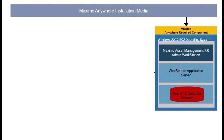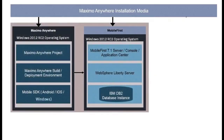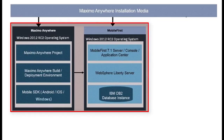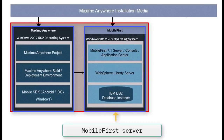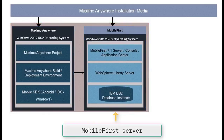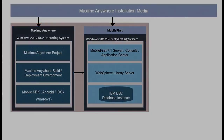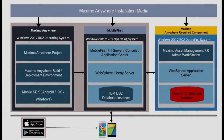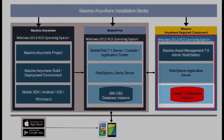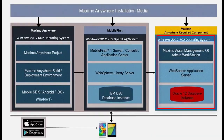There are a number of deployment topologies that can be used when installing Maximo Anywhere and the MobileFirst server. In the instance I am going through today, I will use a single server deployment where Maximo Anywhere and MobileFirst server are installed on the same computer. This is designated as the MobileFirst server. My existing Maximo 7.6 environment on my admin workstation is running Windows 2012 Server, Oracle 12c database, and WebSphere.